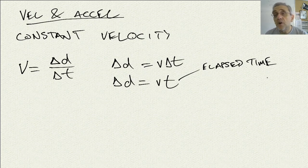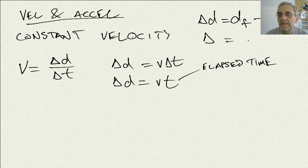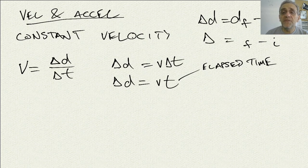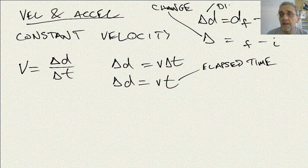However, delta d is a little different — we need to be specific there. We've already learned that delta d equals df minus di, where f and i stand for final and initial. In fact, any delta variable is final minus initial. That's just the nature of change. Whenever you see the delta triangle character, it essentially means change. In this case, delta d is displacement.